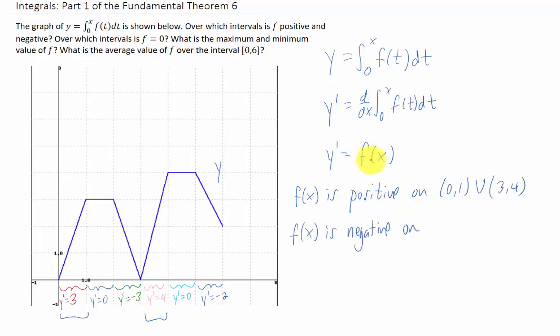And if we want to know where f of x is negative, we just need to know where y prime is negative. So y prime is negative on this interval here and this interval here. That would be the interval 2 to 3 and the interval 5 to 6. And where is f of x zero? Well, that's just where y prime is 0. That would be the interval 1 to 2 and 4 to 5.